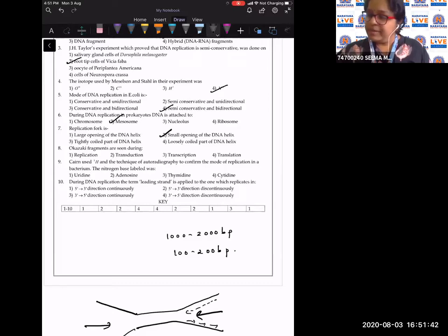Okazaki fragments are seen during the process of replication, which is formed on the template with polarity five dash to three dash.